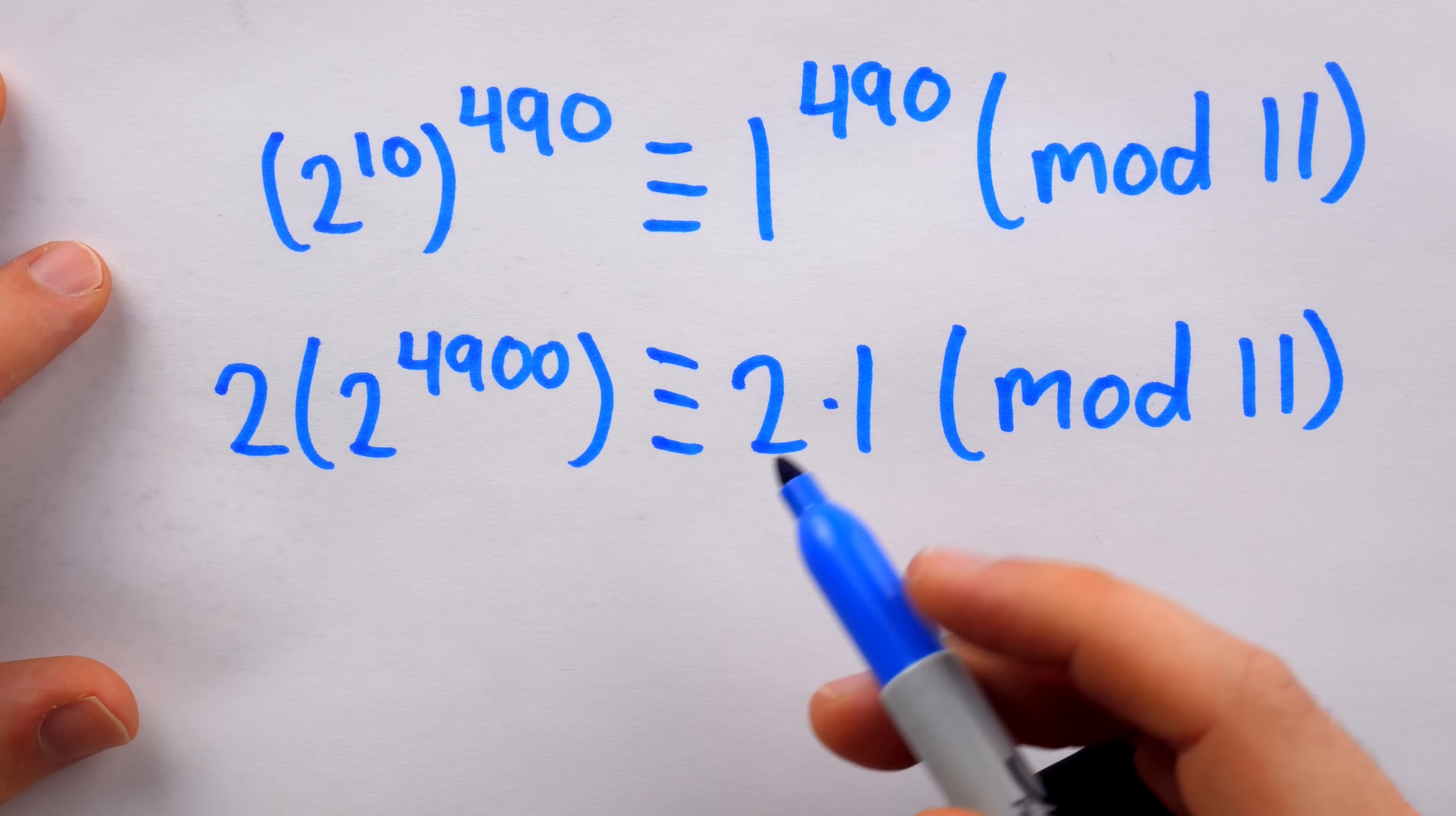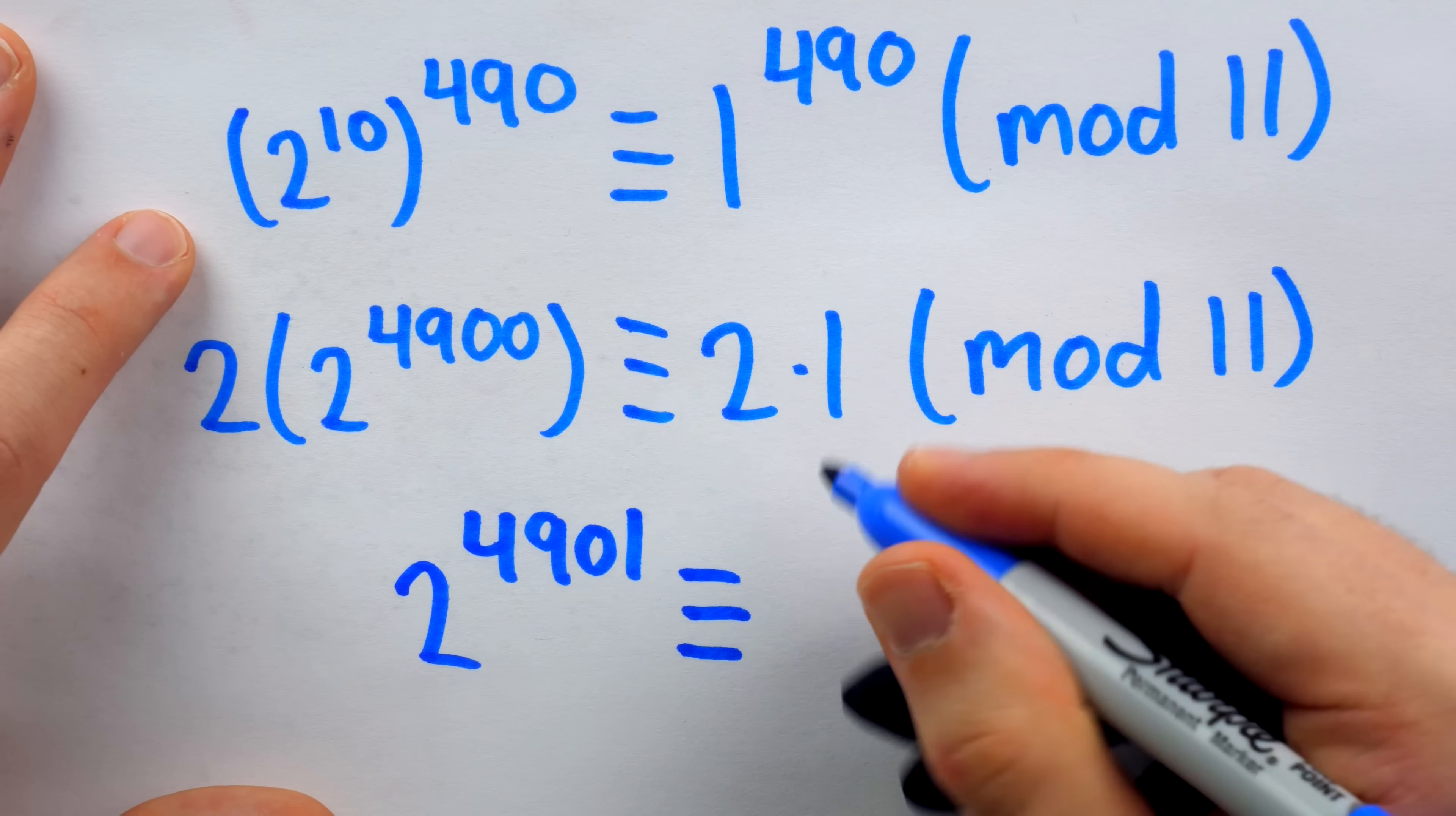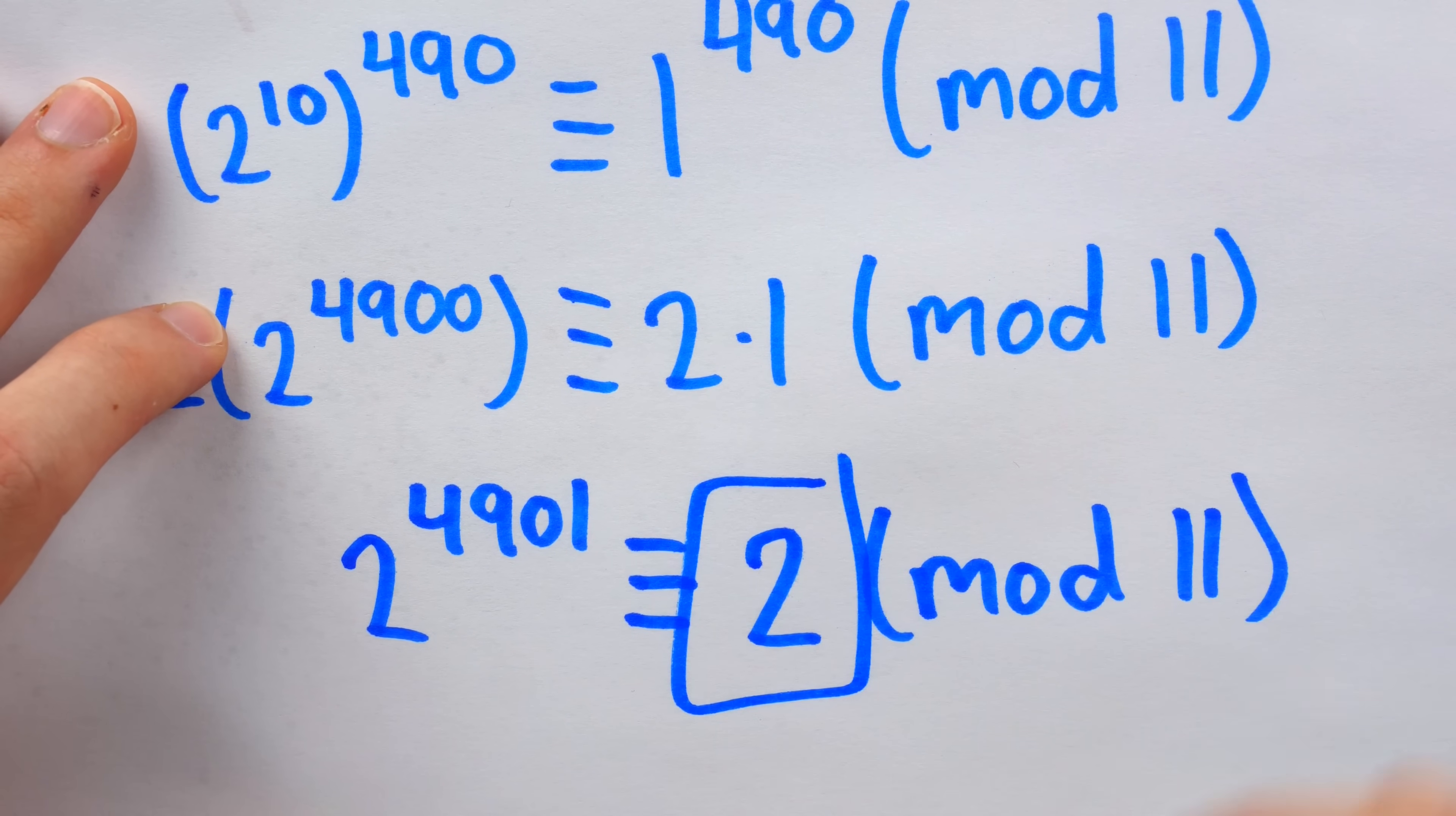Finally, the last step to arrive at our solution, 2 times 2 to the power of 4,900, is of course 2 to the power of 4,901, the number we were originally interested in. And we see that this is congruent to 2 times 1, or just 2, mod 11. So what is the remainder when 2 to the power of 4,901 is divided by 11? The remainder is 2.